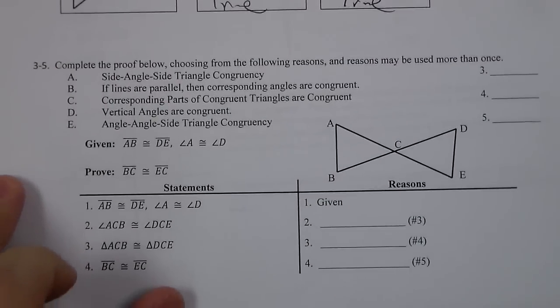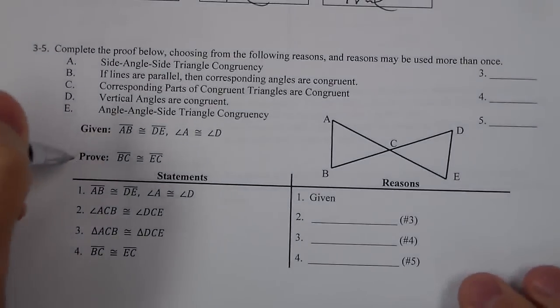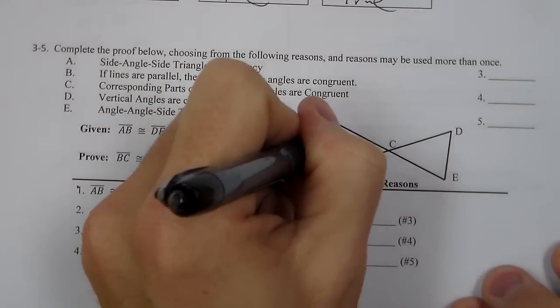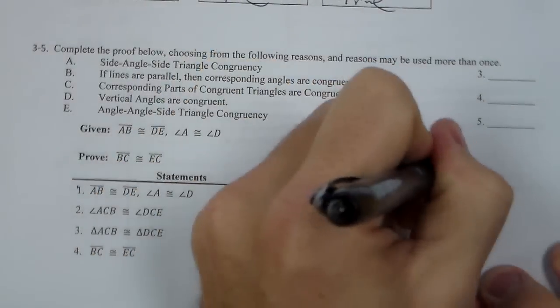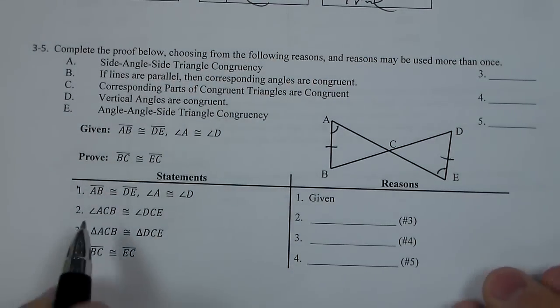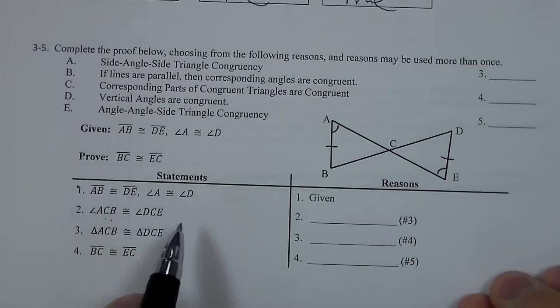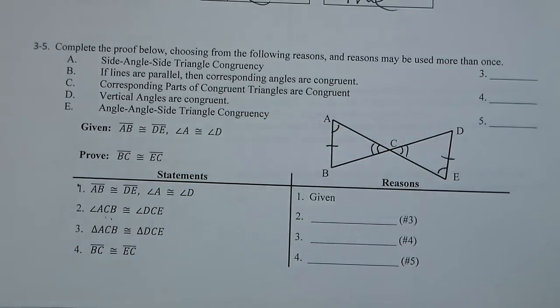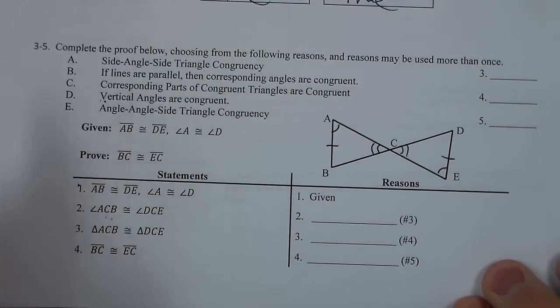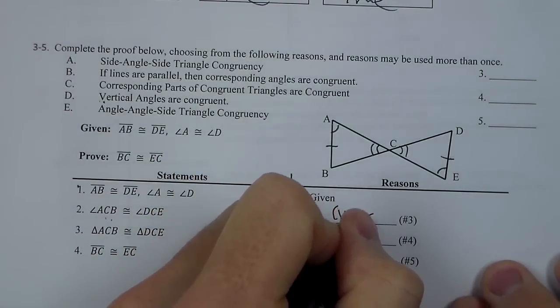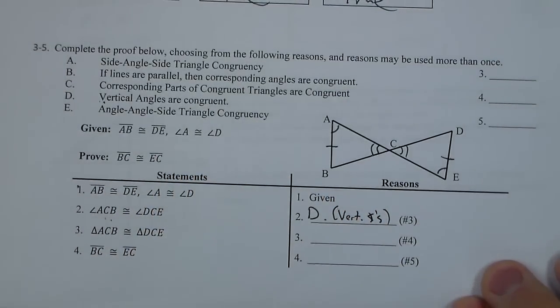Look down at our proof on 3 through 5. First off, we are given that AB is congruent to DE and angle A is congruent to angle E. I'm going to label those there just to give me an idea as I work through the proof.